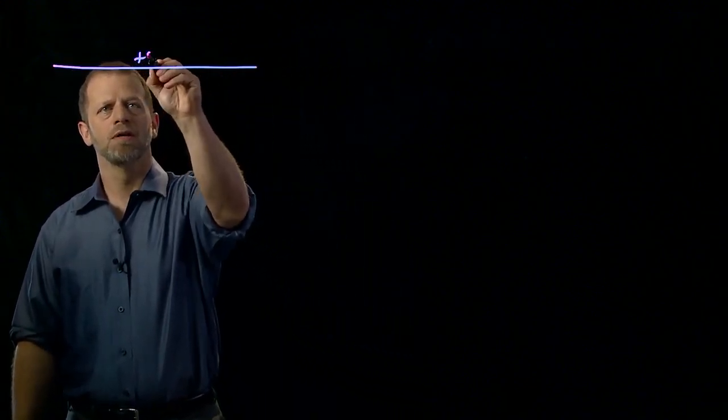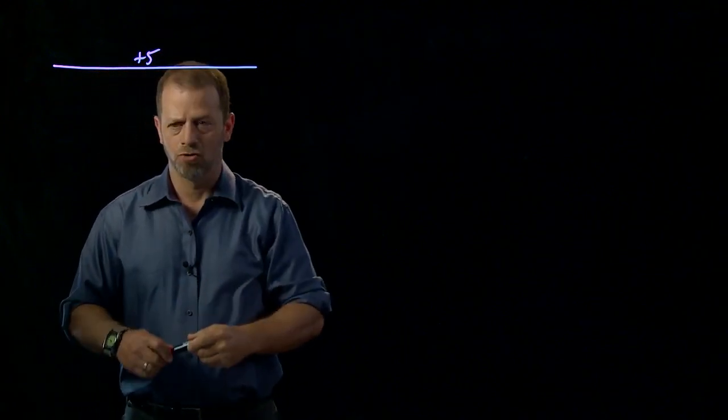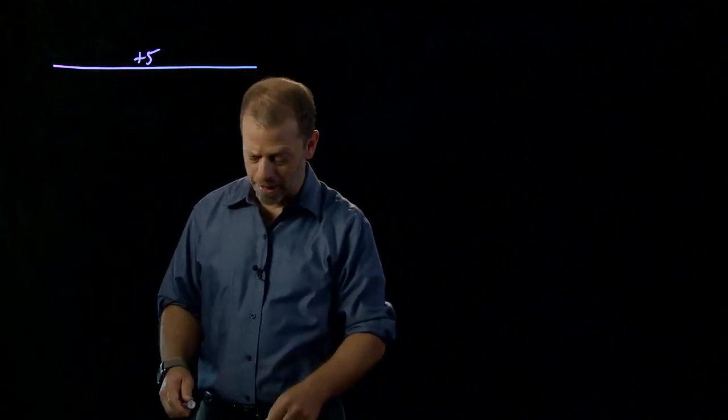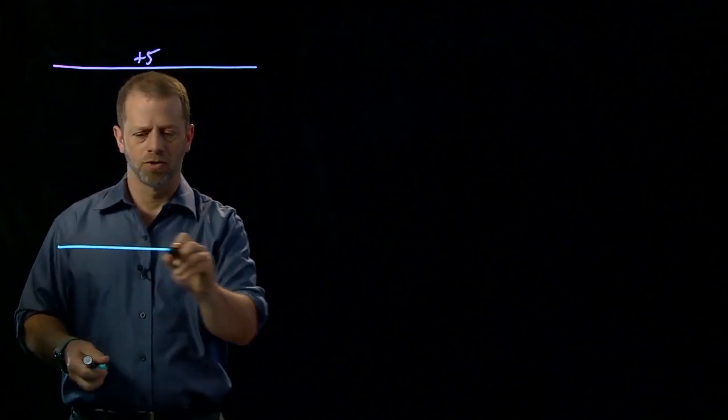Here's a plus 5 volt rail, meaning a piece of conductor drawn into our circuit diagram that's all at positive 5 volts. And I'll draw a ground rail as well.